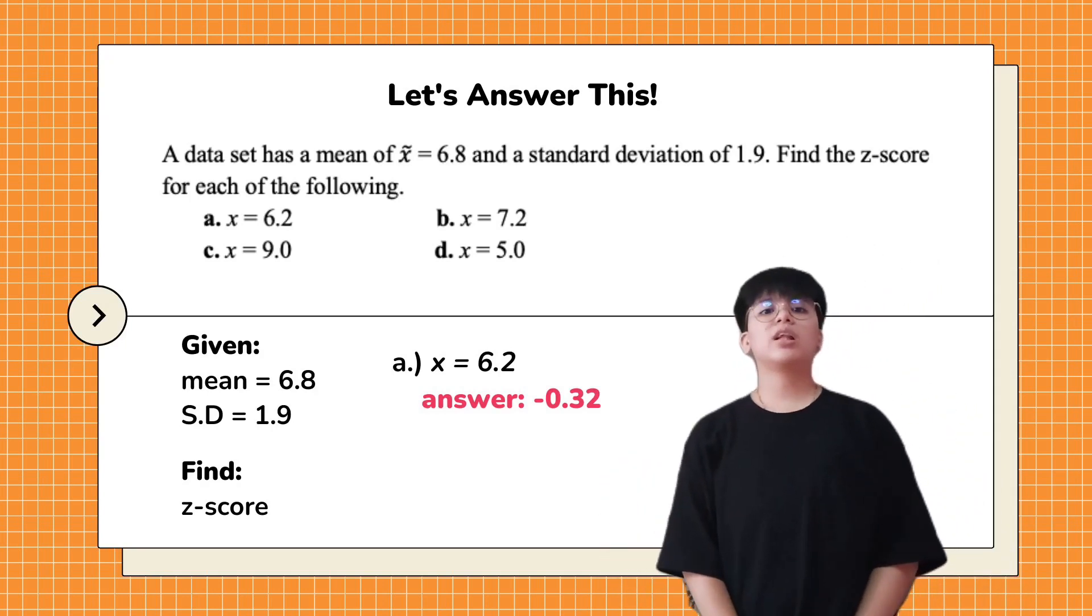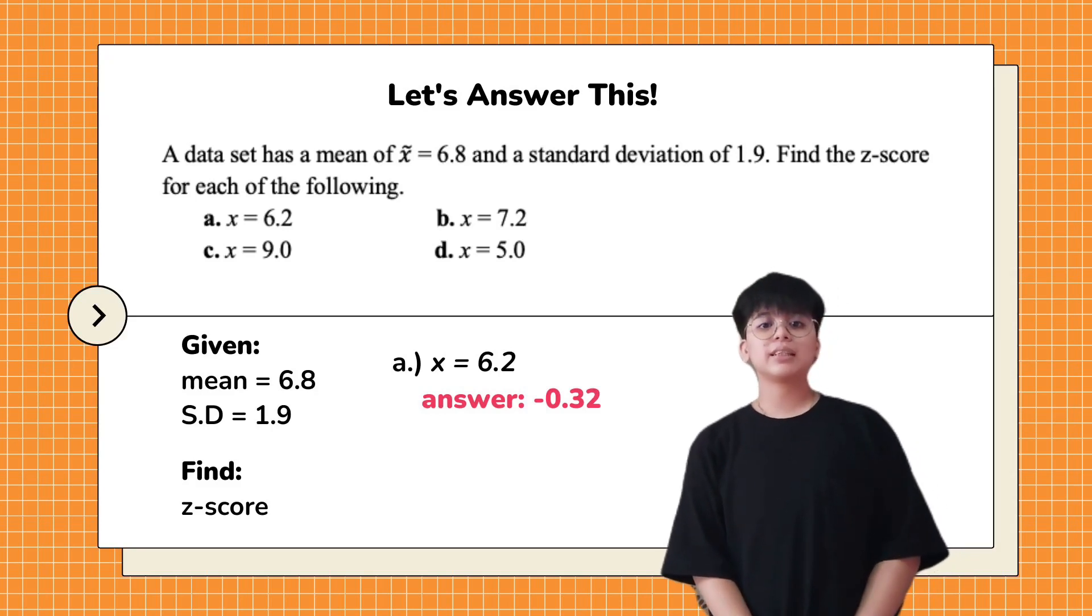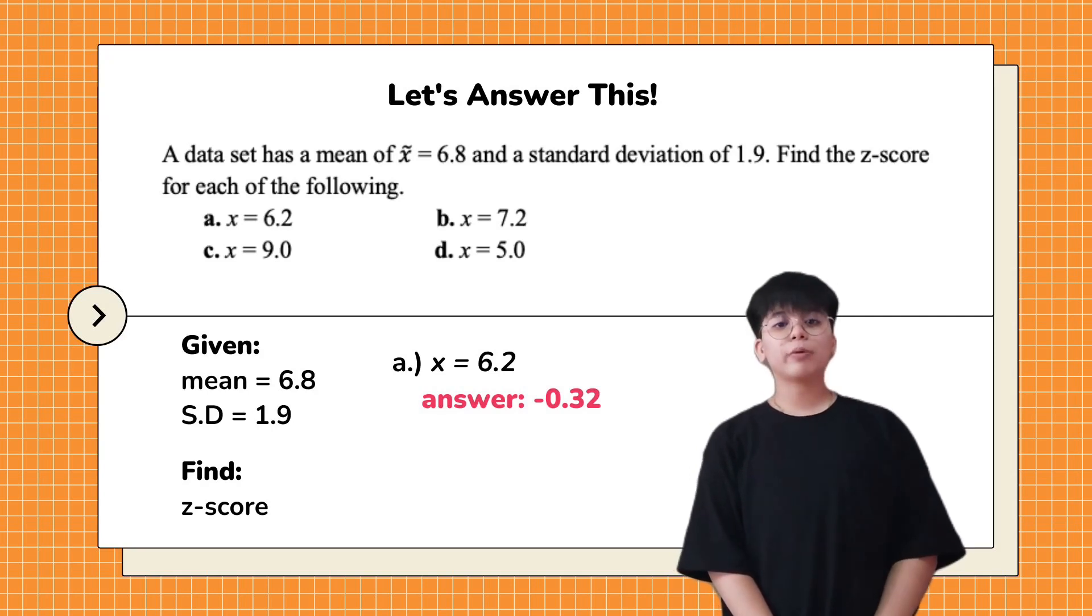We will start first with letter A. But before we solve it, we will analyze the questions first and determine the given values. For letter A, the given value of the missing X is 6.2 and the z-score of it is negative 0.32.